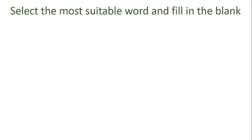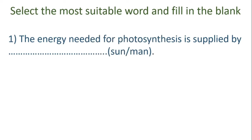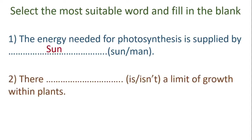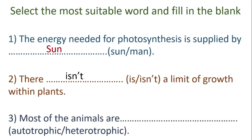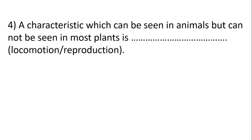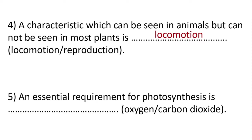Second activity: select the most suitable word and fill in the blanks. The energy needed for photosynthesis is supplied by the sun. Second question: there isn't a limit of growth within plants. Third question: most of the animals are heterotrophic. Fourth question: a characteristic which can be seen in animals but cannot be seen in most plants is locomotion. Fifth question: an essential requirement for photosynthesis is carbon dioxide.